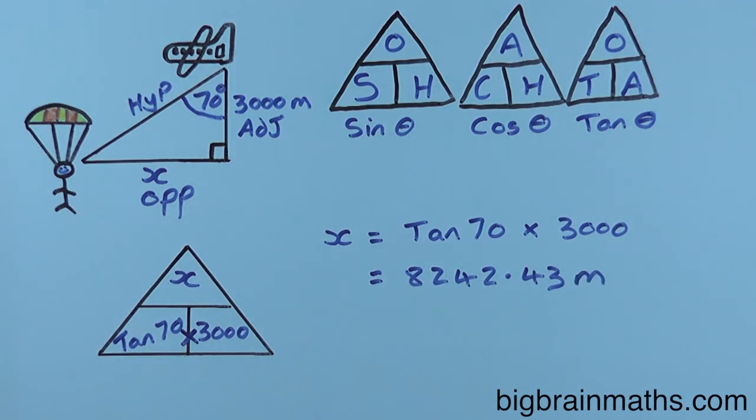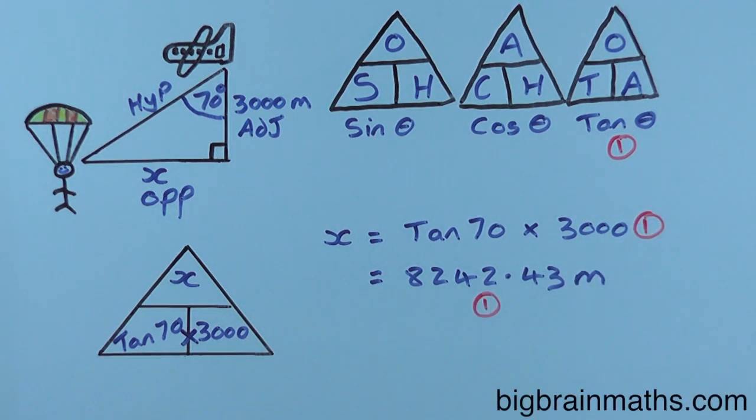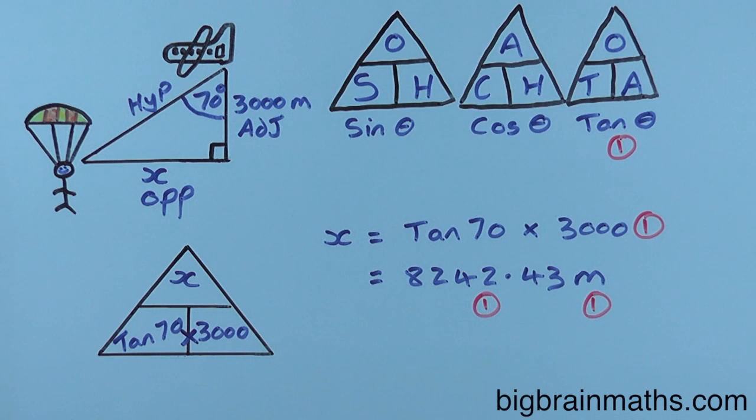Now, it's really important that you set all your work out correctly and show all of your workings. In this question, we got one mark for choosing the correct formula, one mark for the correct workings, one mark for the answer, and one mark for the units.